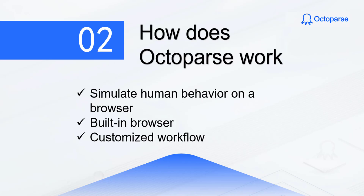The working principle of Octoparse is simulating human behavior on a browser. It can open web pages, click buttons, scroll a page or enter text, and more. It has a built-in browser. All behavior steps will be executed on this built-in browser. If you are a non-coder and want to scrape web page data, Octoparse is a good choice for you. You can customize your own crawlers or tasks by designing workflow steps from simple clicks and points on web pages. Octoparse will then follow the workflow and automate the process to get website data.